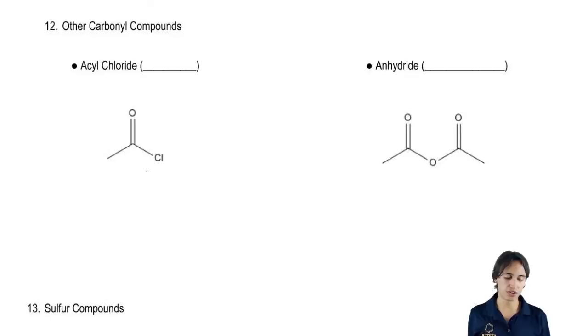So acyl chloride, acyl chloride you can think of it like an aldehyde, but instead of having an H, it has a Cl. And the acyl chloride has a condensed structure of basically R-C-O-C-L. So if you ever see that, that's an acyl chloride.